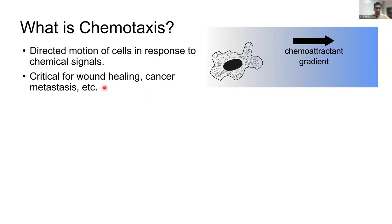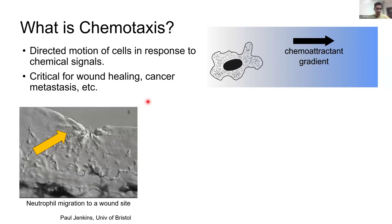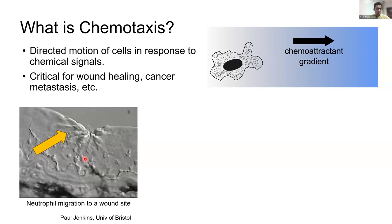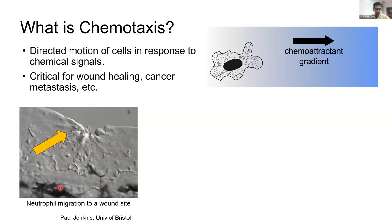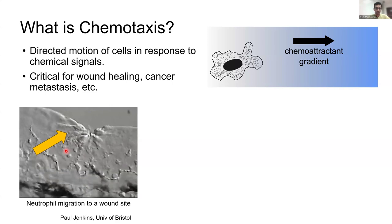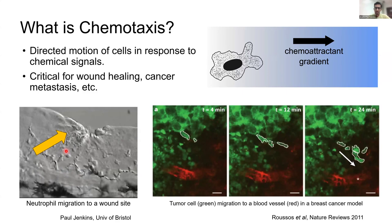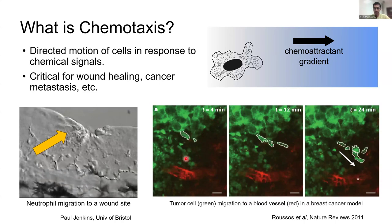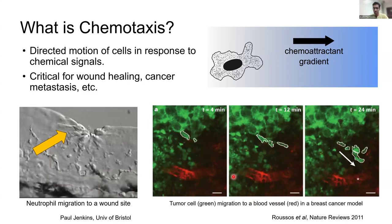We study this because it occurs in a wide variety of biological contexts. It is critical for wound healing in tissues, and it is also seen in cancer metastasis. To give you some flavor of this phenomenon, here are some videos showing chemotaxis: first, in a bloodstream when a wound has been artificially created on the skin of a fish, where neutrophils are moving away from the bloodstream and towards the wound site. A second example is the spreading or metastasis of cancer in a mouse model, where tumor cells move away from the tumor and into the bloodstream, also through chemotaxis.